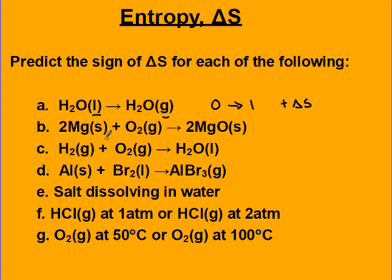This next one went from three moles of reactants total to two moles of products. But more importantly, we went from one mole of gas to no moles of gas. So that's a decrease, or a negative delta S value for the reaction.